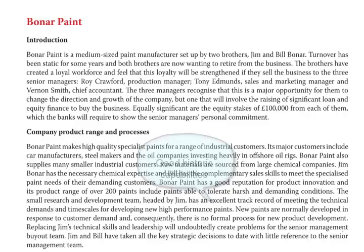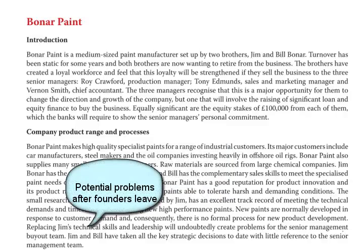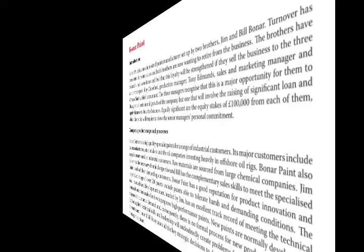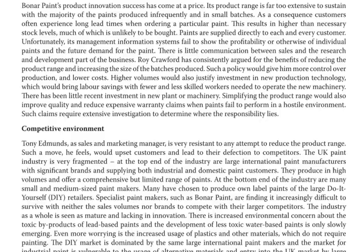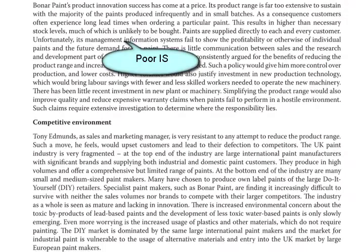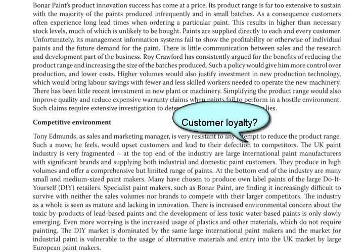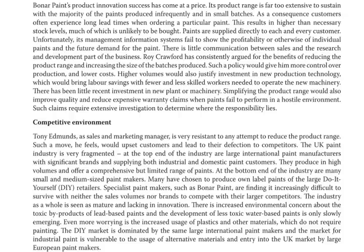The question points out that there will be a problem when Jim Boner retires. The company's large range is causing difficulties in keeping costs low and providing a good enough service — the products are good, but the service is poor and the costs are high. The management information system is poor, and the management buyout team will have to address this. A smaller product range and higher volumes would give them a chance to lower costs. Bona Paint has been trading on a differentiation-focused strategy, but there's a suggestion that customers would be willing to switch, which is a concern — particularly in a fragmented industry. Bona Paint is perhaps in a little danger of being stuck in the middle.